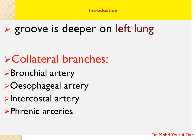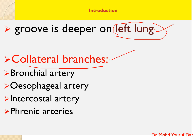This groove is deeper on the left lung compared to the groove on the right lung. There are four collateral branches that arise from the thoracic aorta: the bronchial artery, esophageal artery, intercostal artery, and phrenic artery.